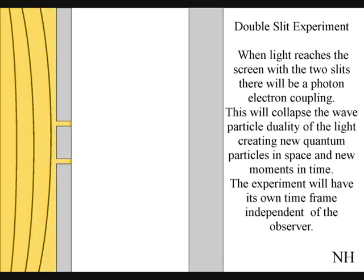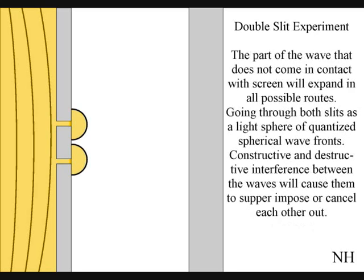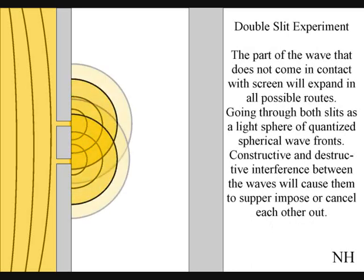Light waves will come in contact with the plate with the two slits, collapsing into new photons with a position in space and time. The light waves that do not come in contact with the plate will go through both slits.